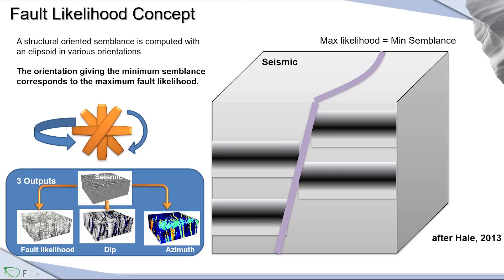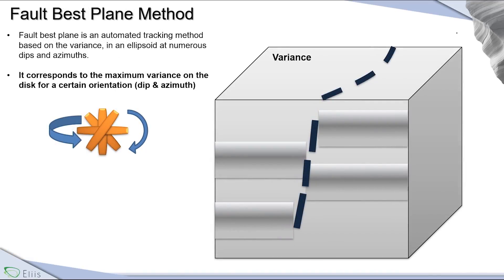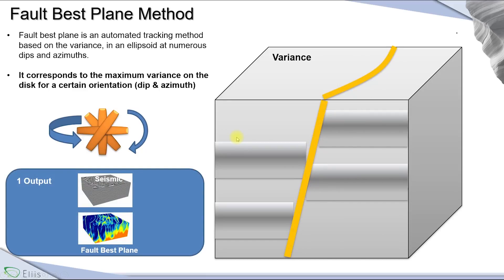We adapt this algorithm to fit with our existing attributes and our way to compute attributes, to be more efficient on the fault computation. We create what we call the fault base plane method. From the seismic, we compute the variance as shown before. Then, exactly as the fault likelihood method, we rotate the disk in different directions — dip and azimuth — to find the maximum of variance to obtain what we call the fault base plane. With this attribute, we obtain only one attribute as output: the fault base plane.